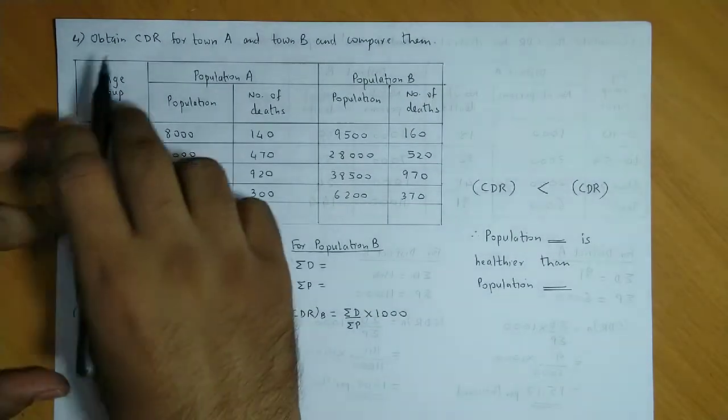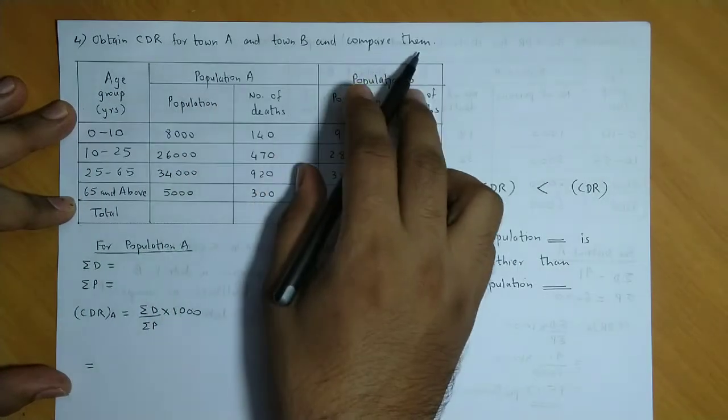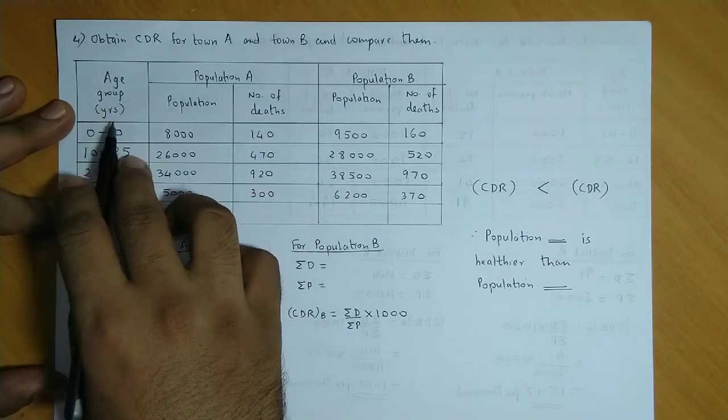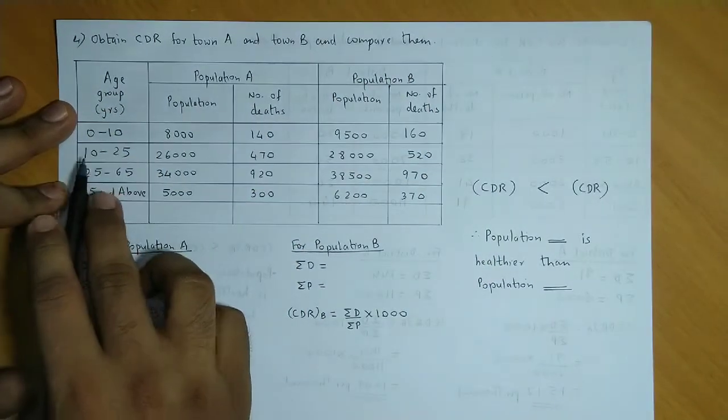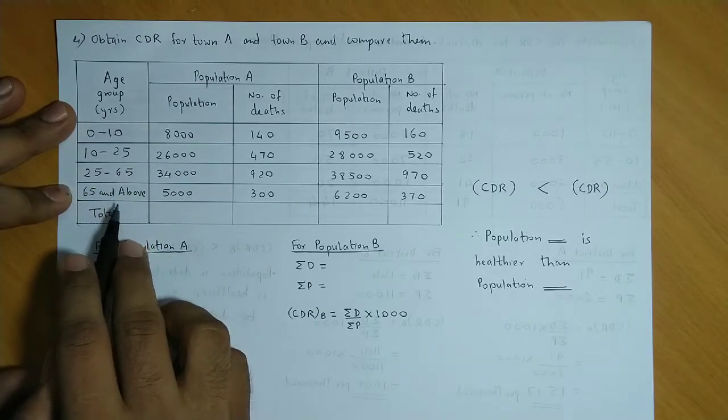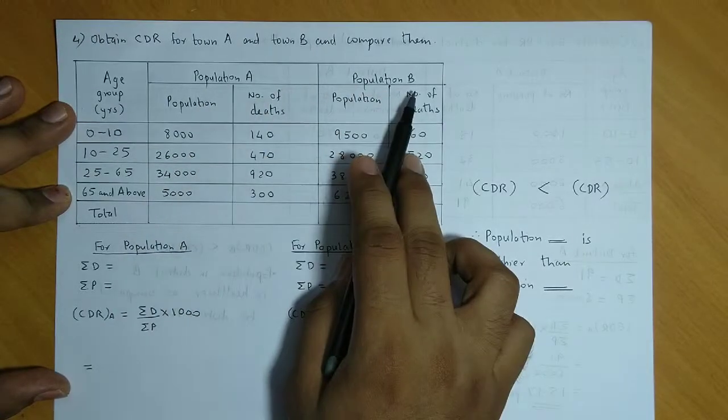Question number four. Obtain CDR for town A and town B and compare them. Now here we have been given the age groups in years: 0 to 10, 10 to 25, 25 to 65, 65 and above. And we have been given the corresponding population A and population B.